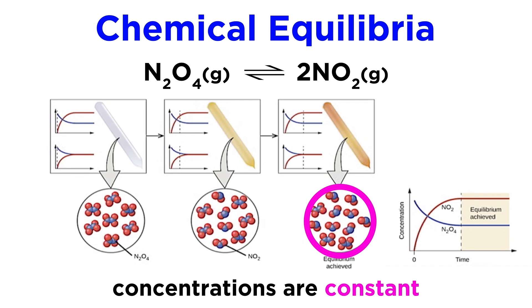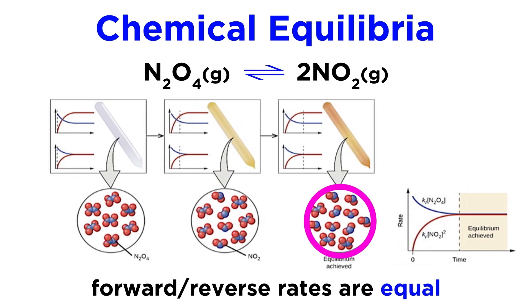At equilibrium, concentrations will become constant, and the forward and reverse rates of reaction will become constant as well as equivalent to one another, since the forward and reverse reactions must be occurring at precisely the same rate in order for the concentrations to remain constant.